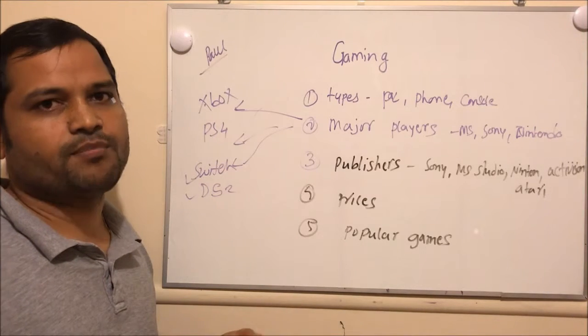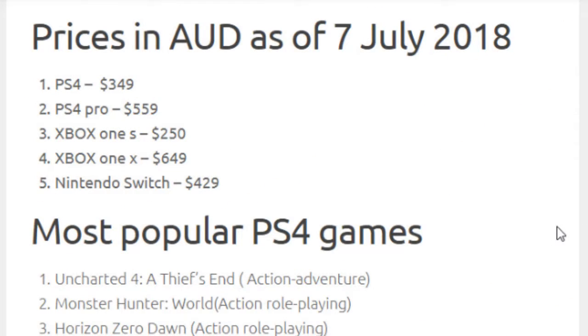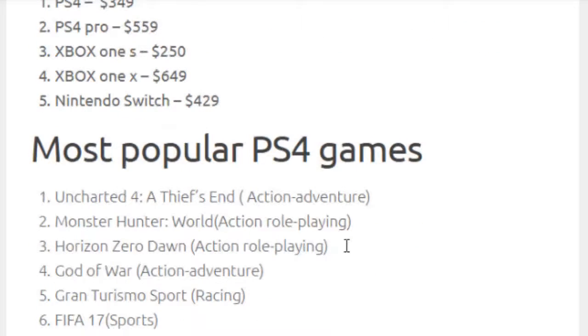Now let us go to the computer and see prices and what are the most popular games. If you look at the prices, PS4 will cost you 349 Australian dollars, PS4 Pro will cost you 559 dollars. Xbox One S will cost you 250 dollars, Xbox One X will cost you 640 dollars. Nintendo Switch will cost you 429 dollars as of July 2018.